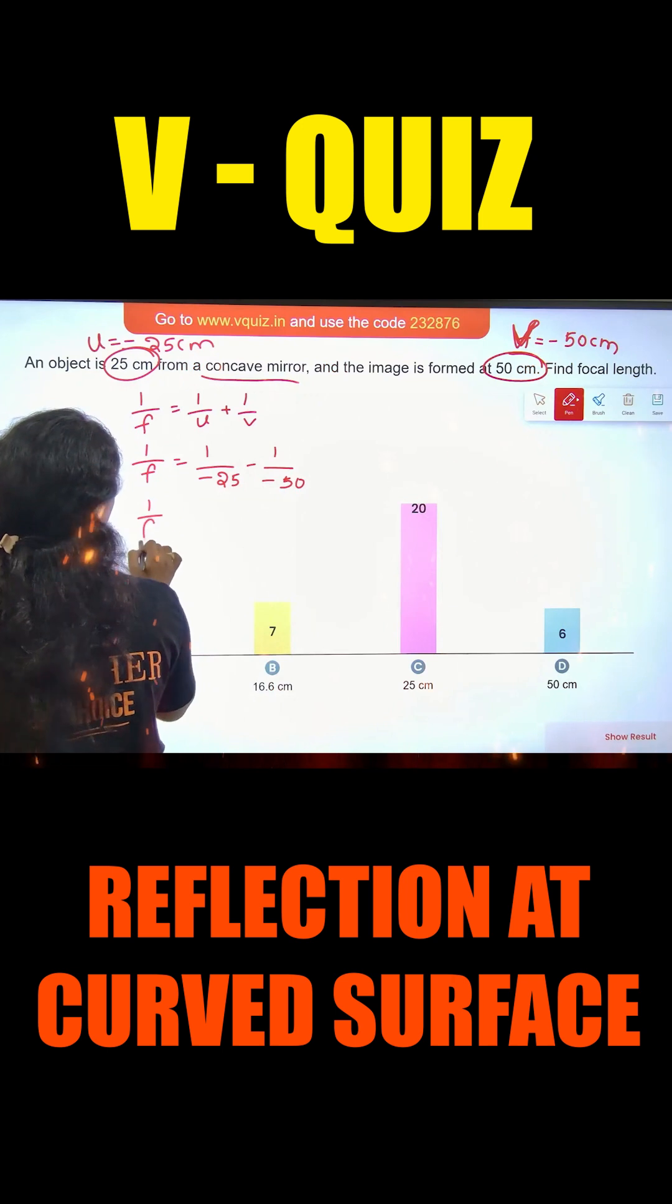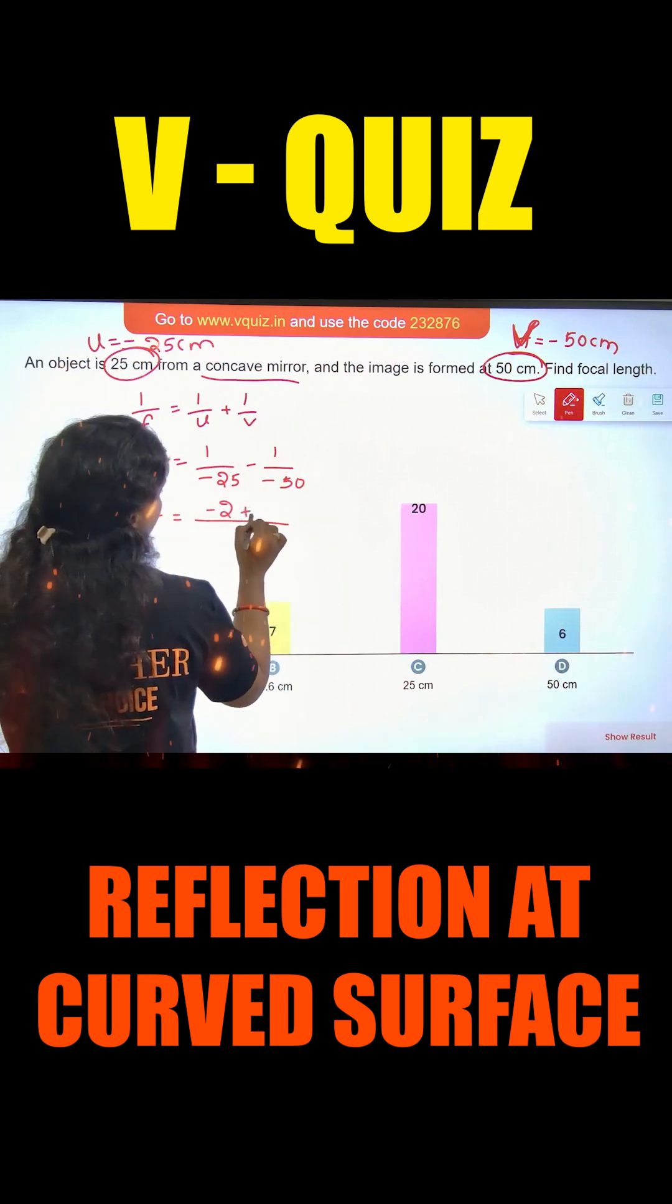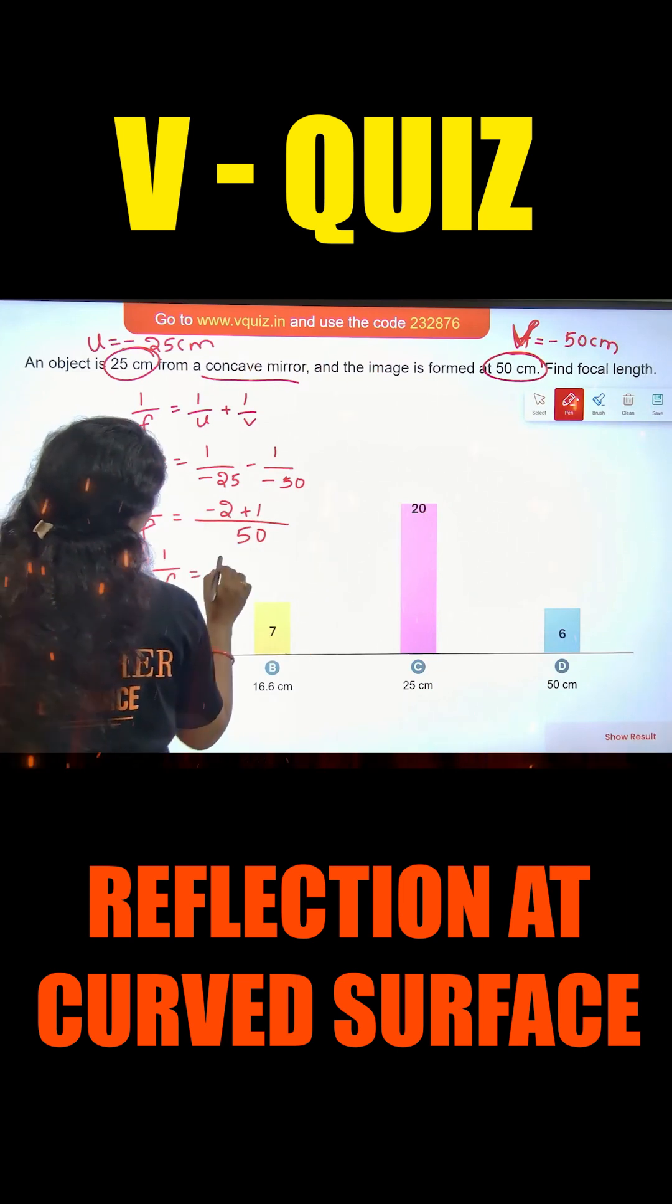Minus minus is plus. 1 by F is equal to 50 cm. 25 by 50 is 2 times divided, so minus 2 plus 1. 1 by F is equal to 1 by 50.